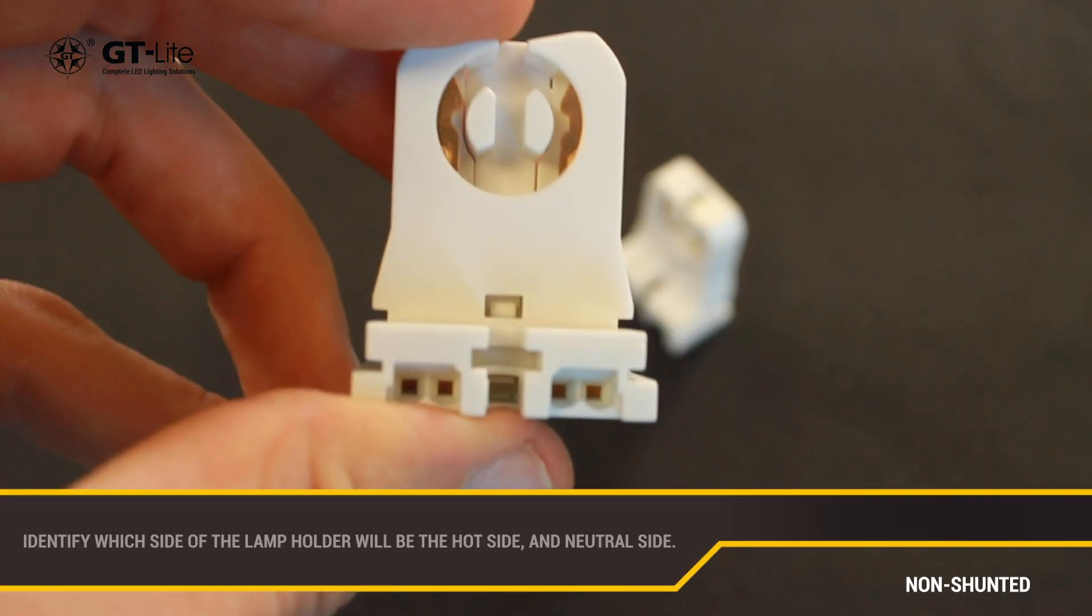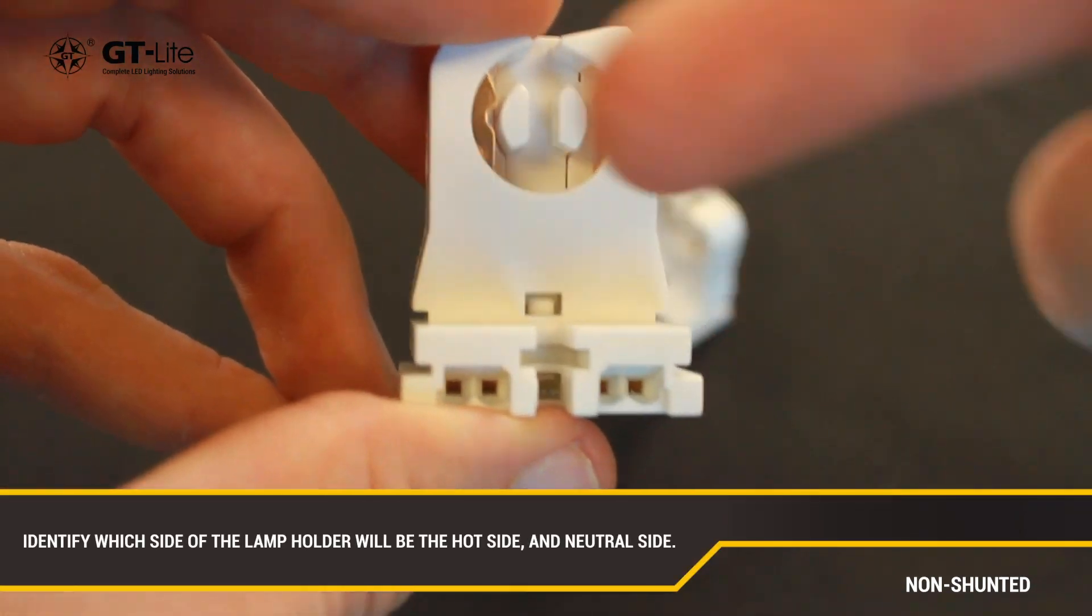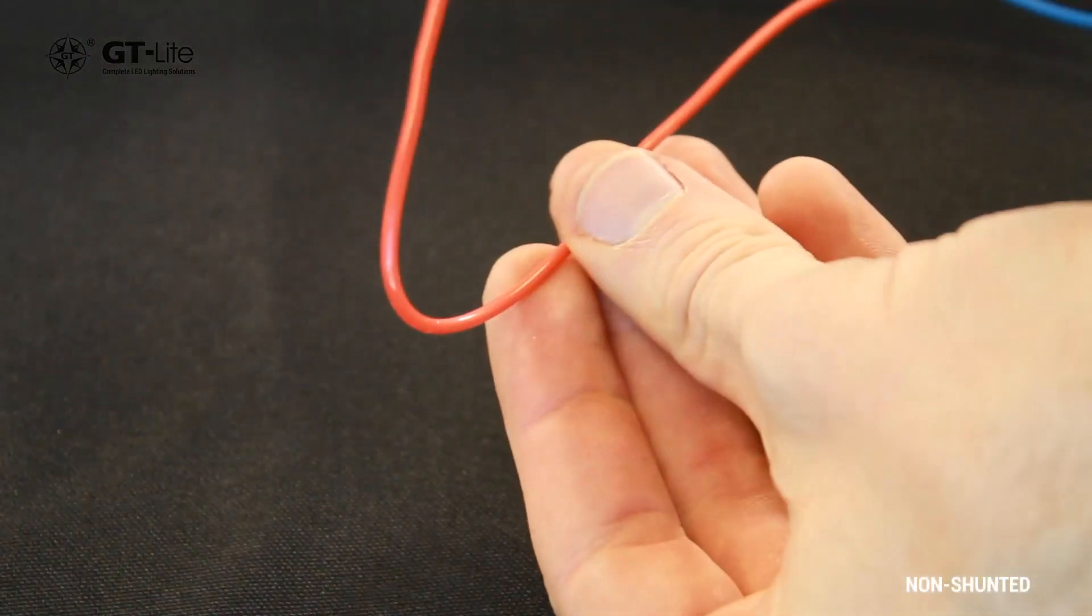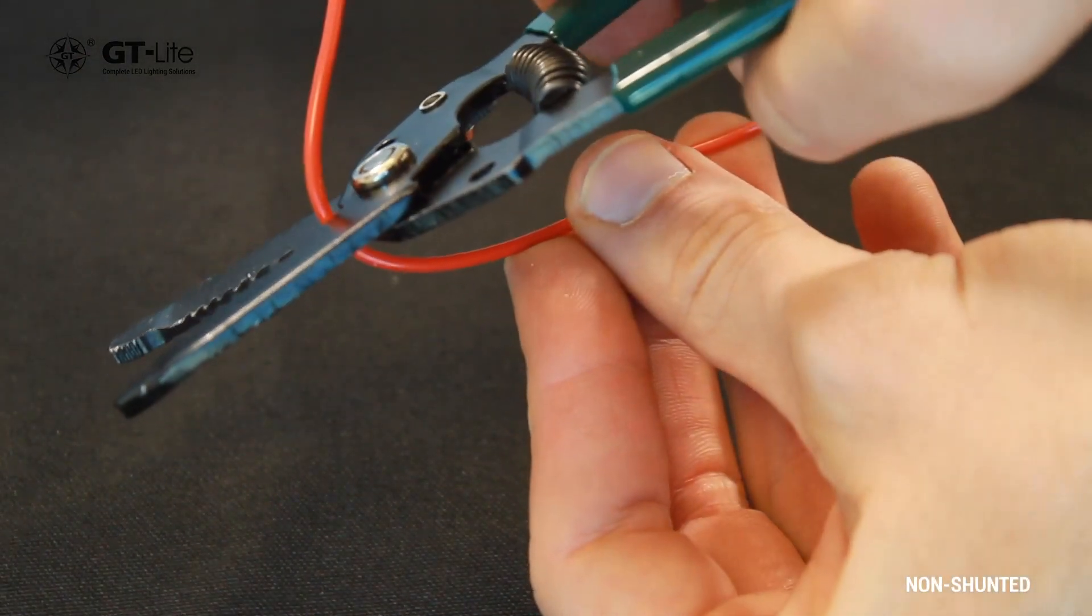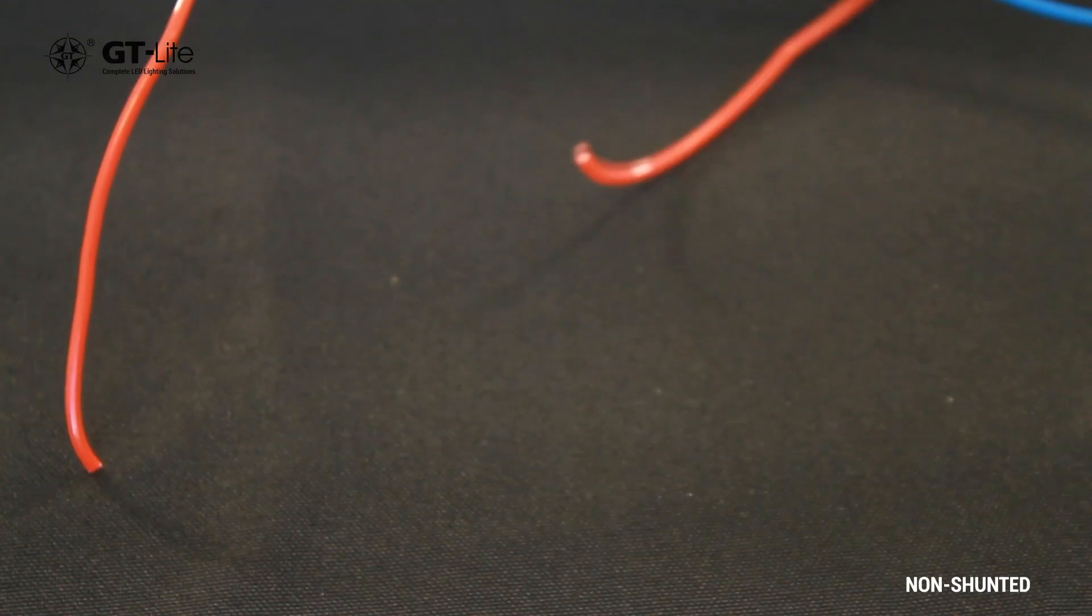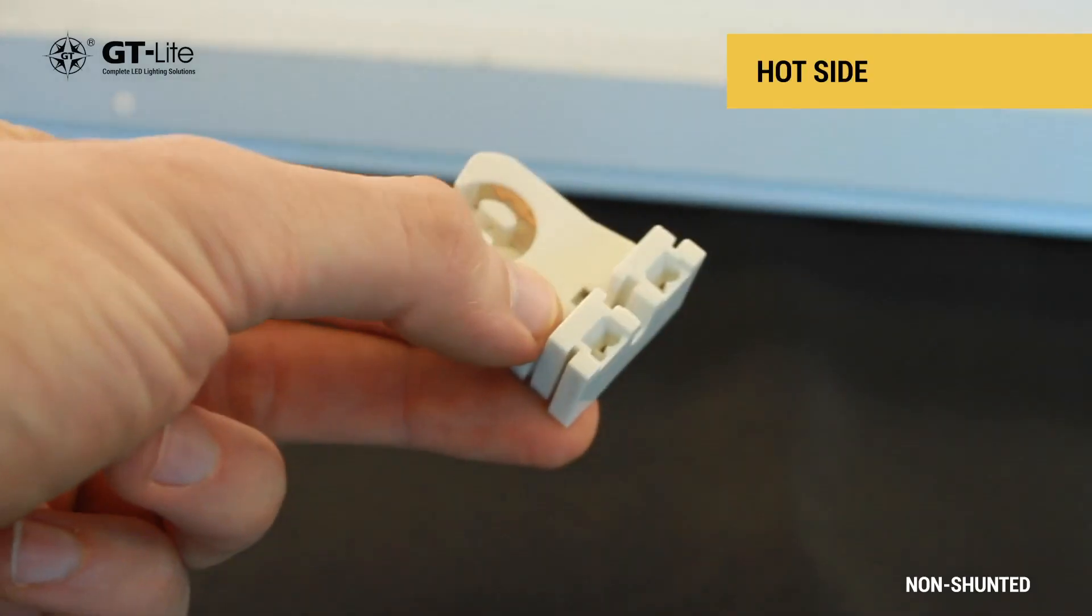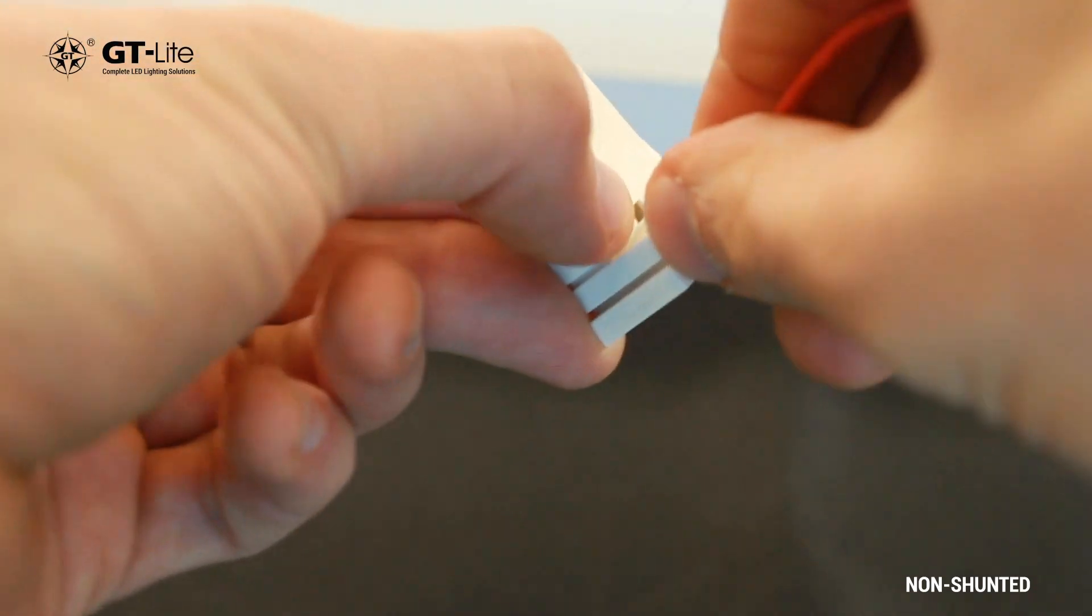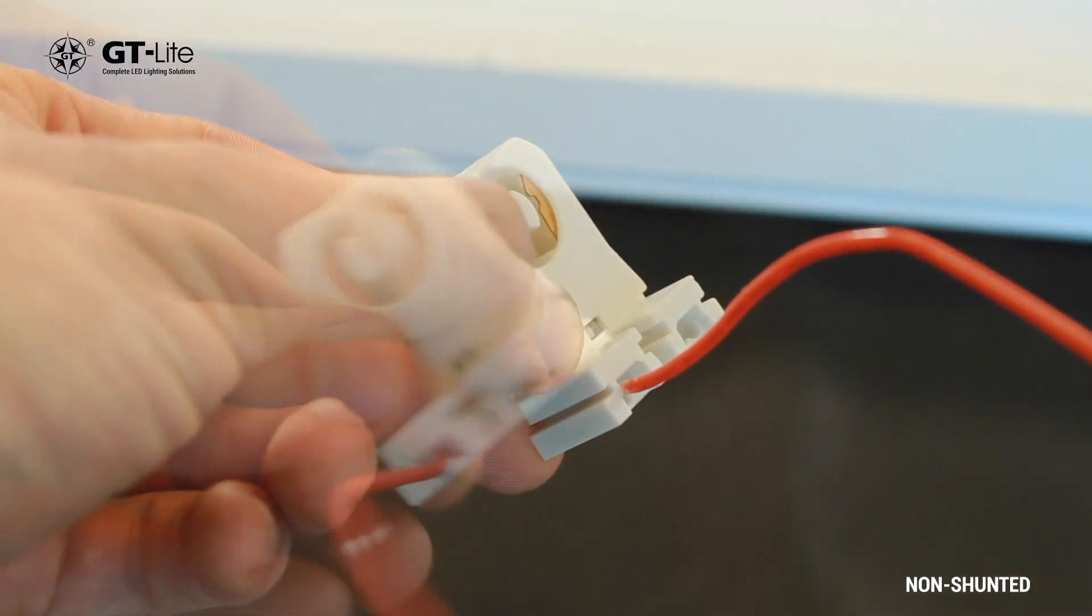On the non-shunted lamp holder, designate one side and one wire to be hot and the other to be neutral. In some cases, you may have to cut a wire in half so you can power each bulb. If you do so, be sure that each wire can reach its respective lamp holder. It is best practice to keep these colors and charges consistent across all fixtures that you rewire.